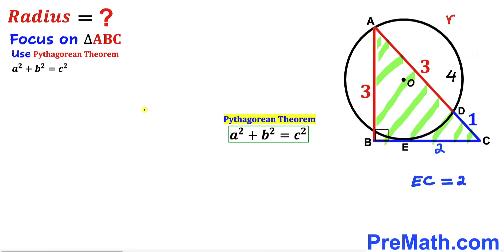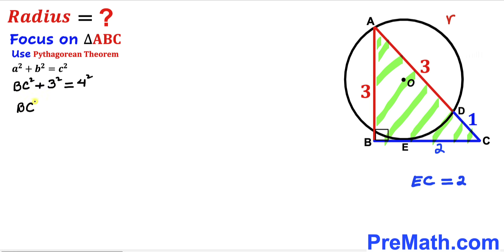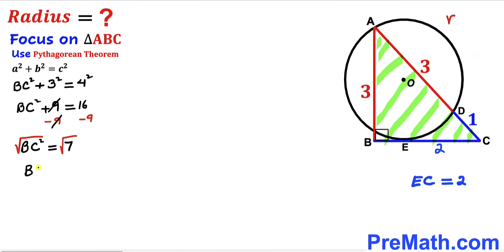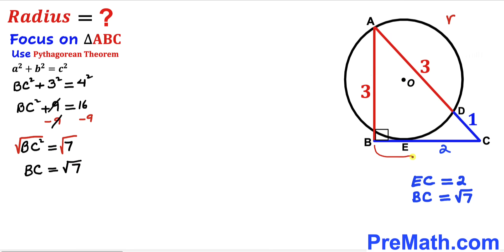Let's fill in the Pythagorean formula: BC² + 3² = 4², which gives BC² + 9 = 16. Subtracting 9 from both sides, BC² = 7. Taking the square root on both sides, BC = √7. So our side BC length turns out to be √7.